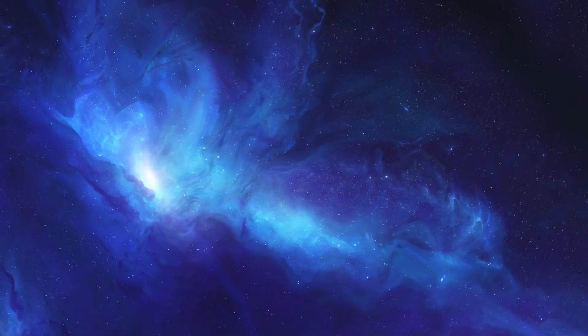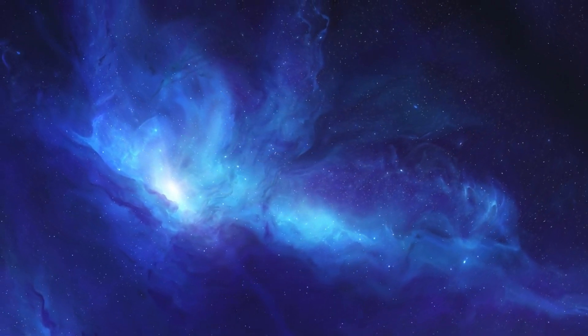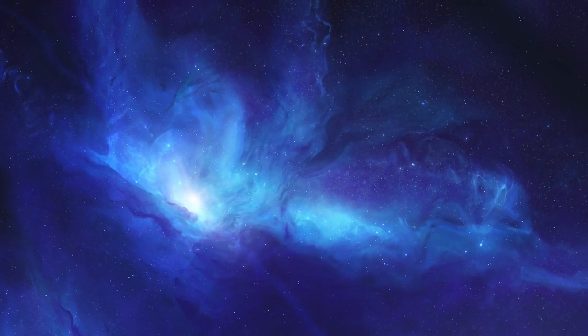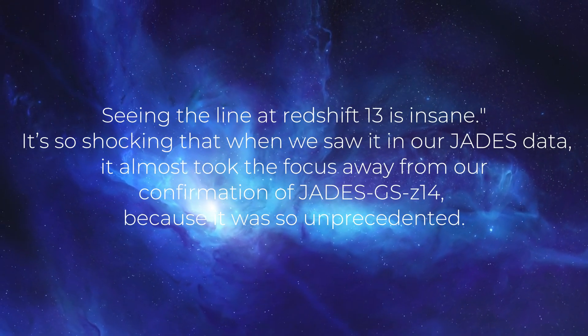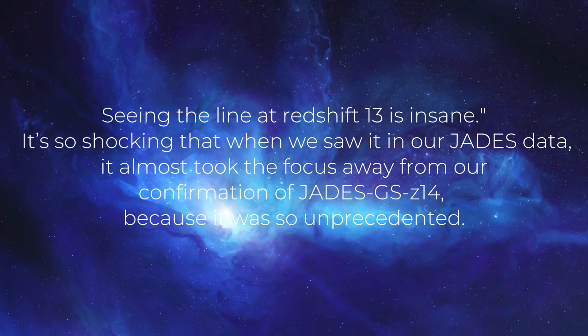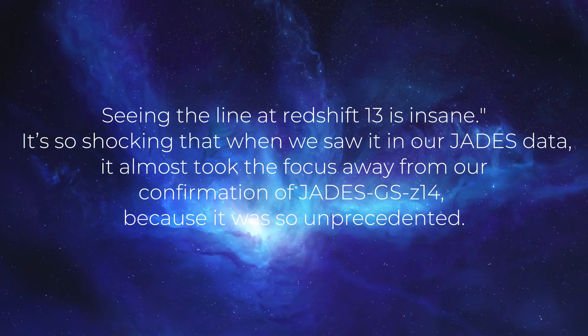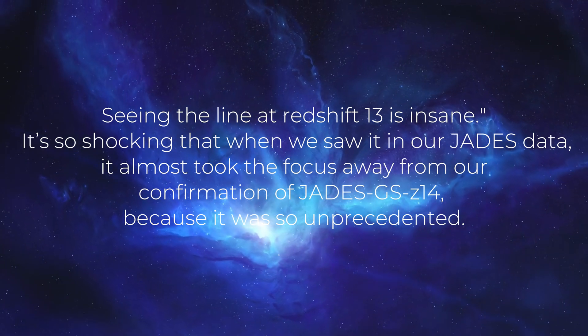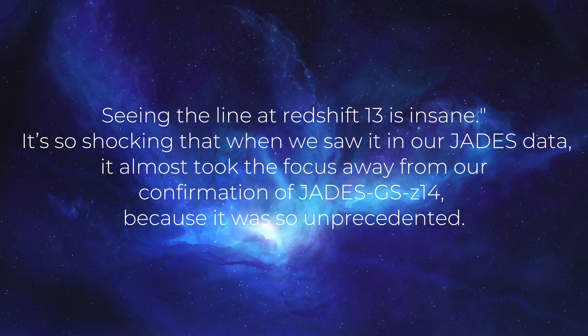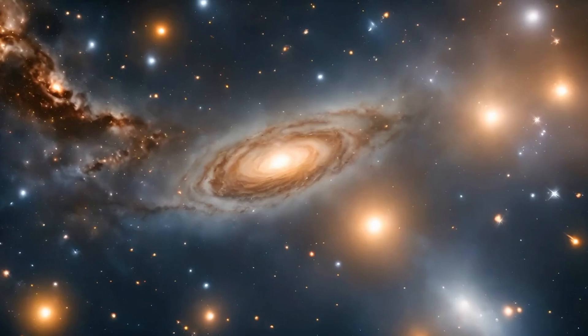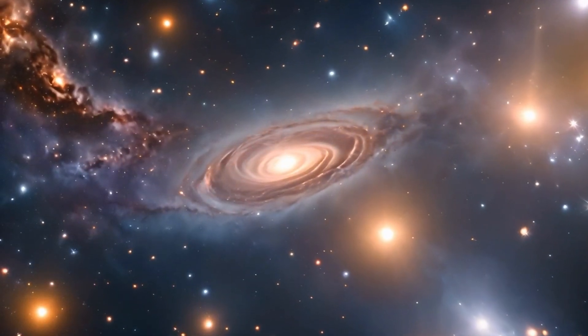One of the astronomers who discovered this galaxy recently tweeted his thoughts on social media, saying, seeing the line at redshift 13 is insane. It's so shocking that when we saw it in our Jade's data, it almost took the focus away from our confirmation of Jade's GS Z14, because it was so unprecedented. How is this light finding its way to us through the opaque universe?